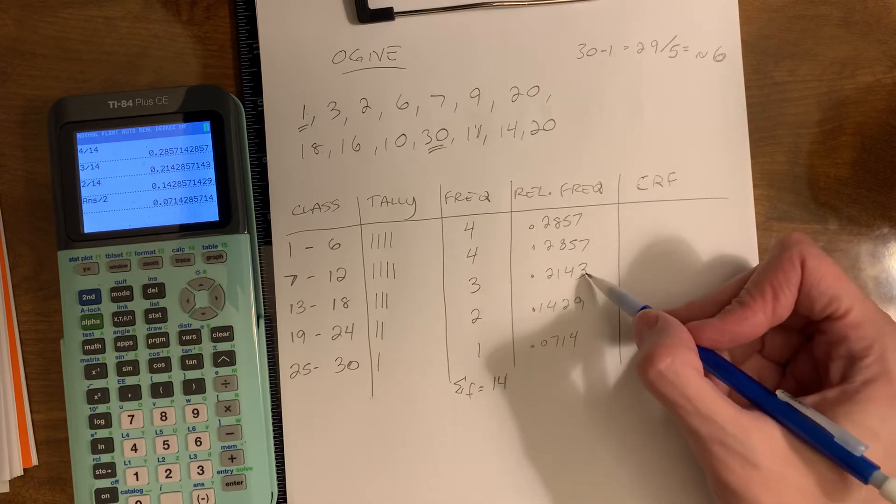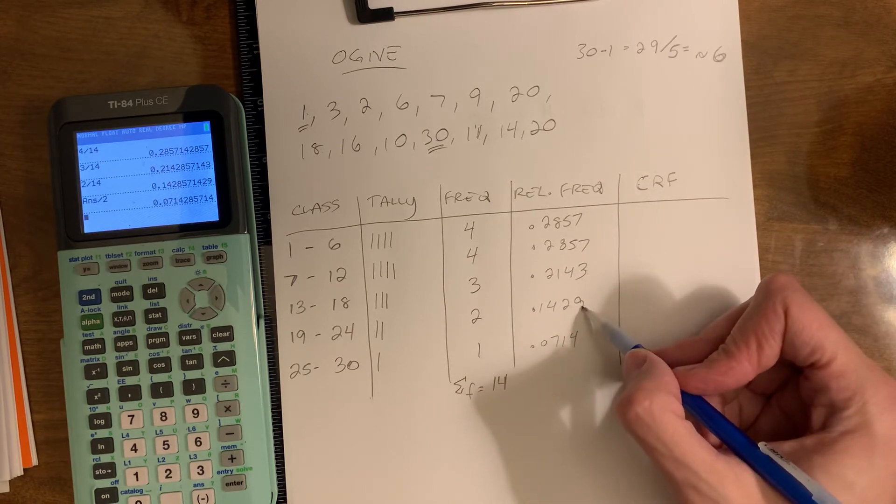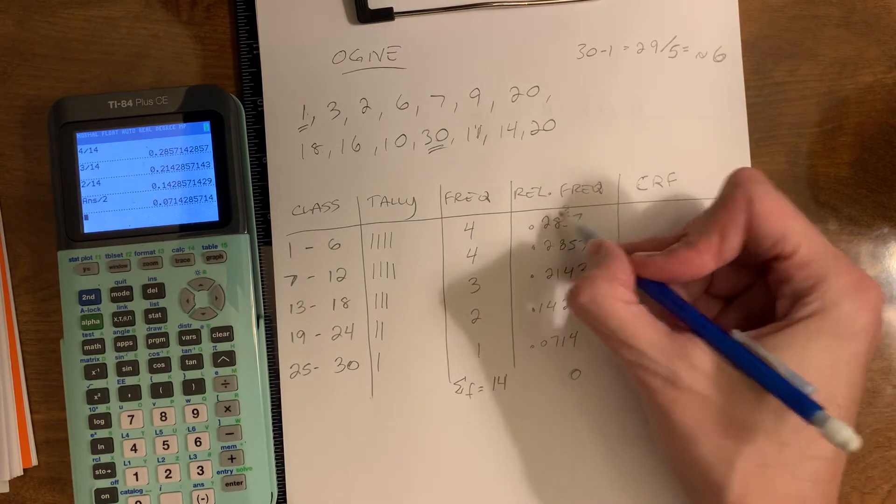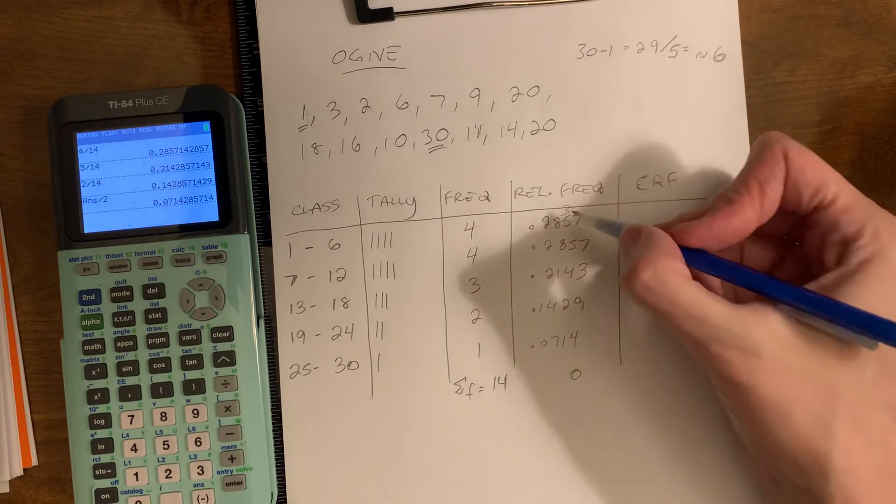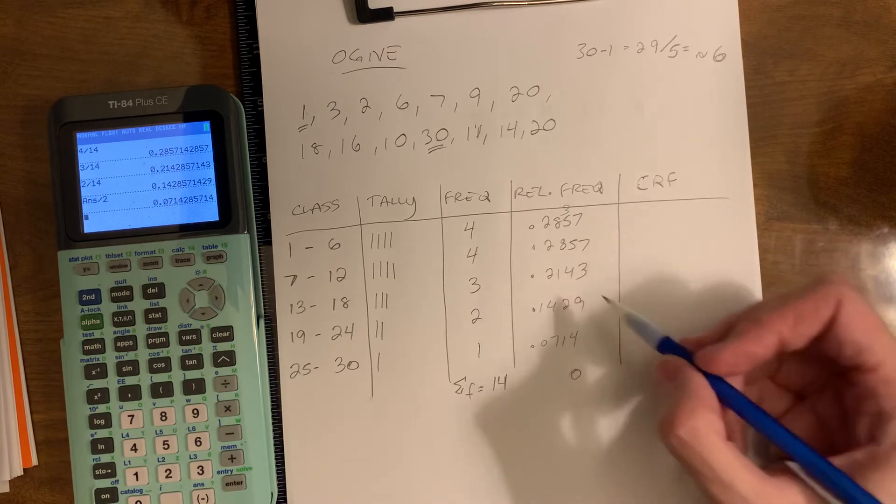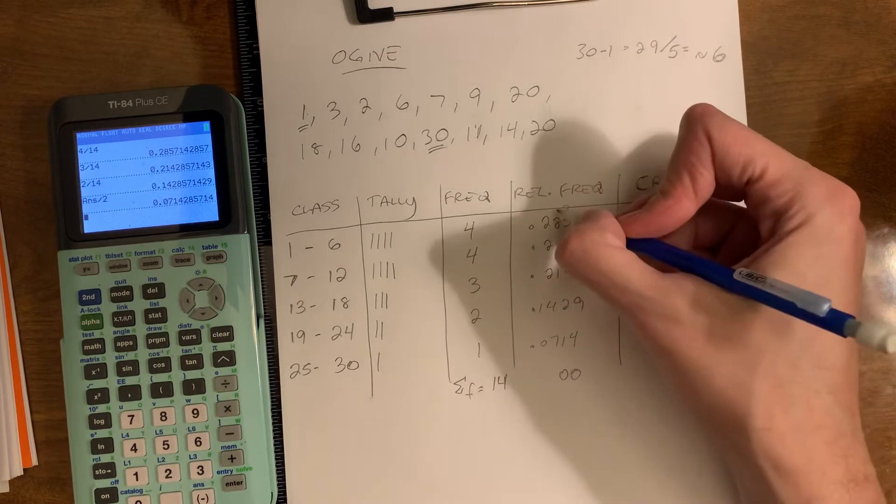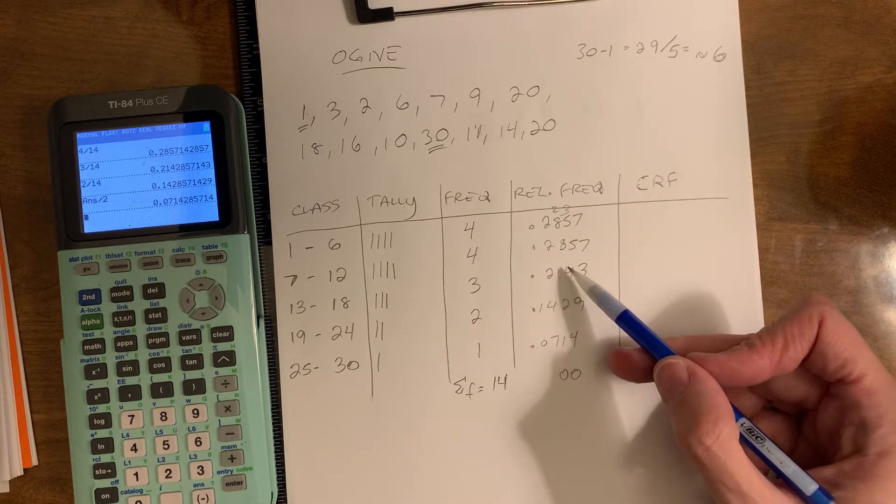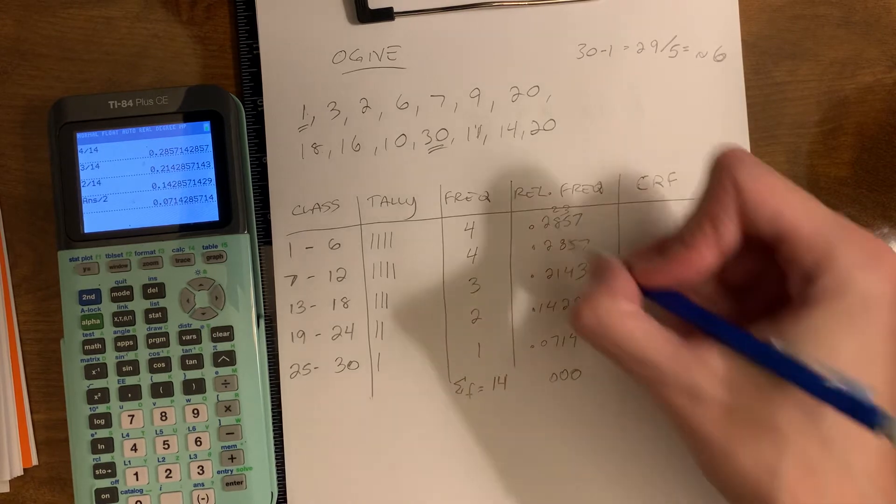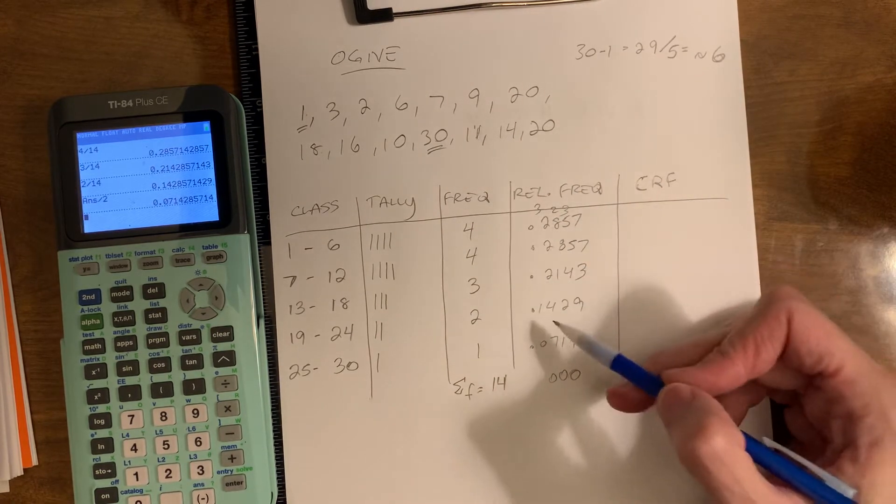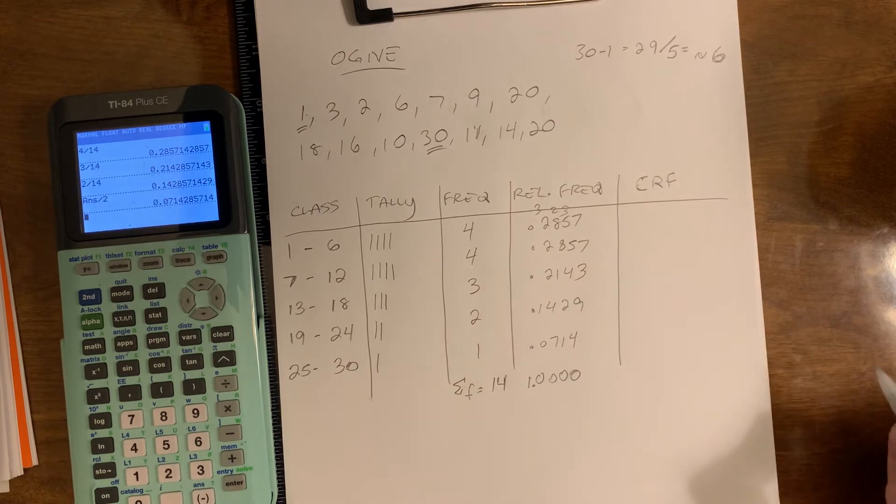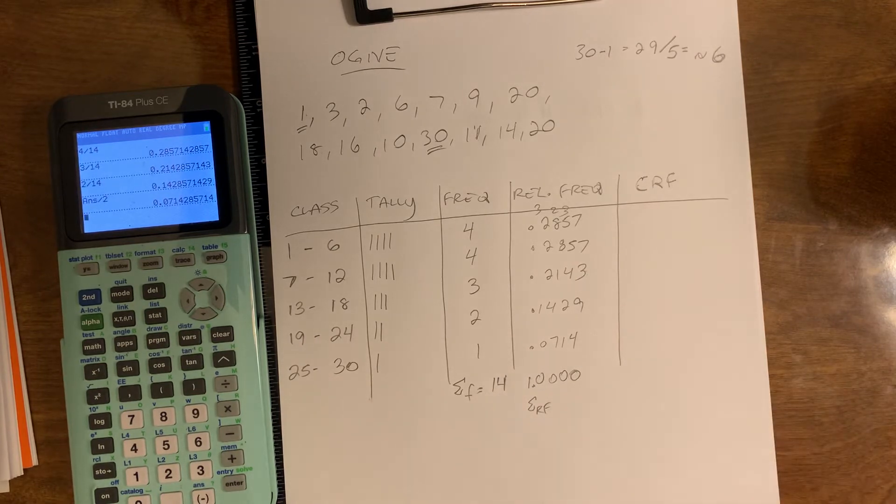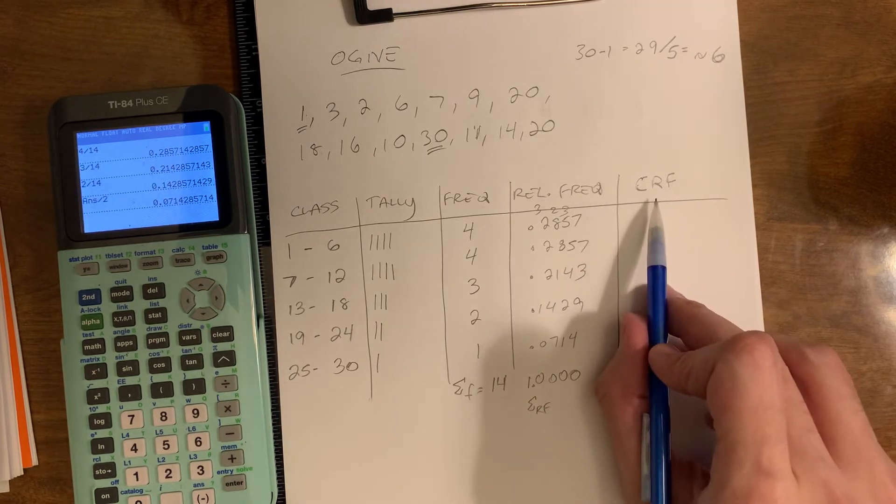If we add up all these values, I'm already pretty confident we're going to get a perfect 1.0000. It's perfect. So the sum of my relative frequency is 1, 1.0000. You know what? That's exactly what this column is for, cumulative relative frequency.